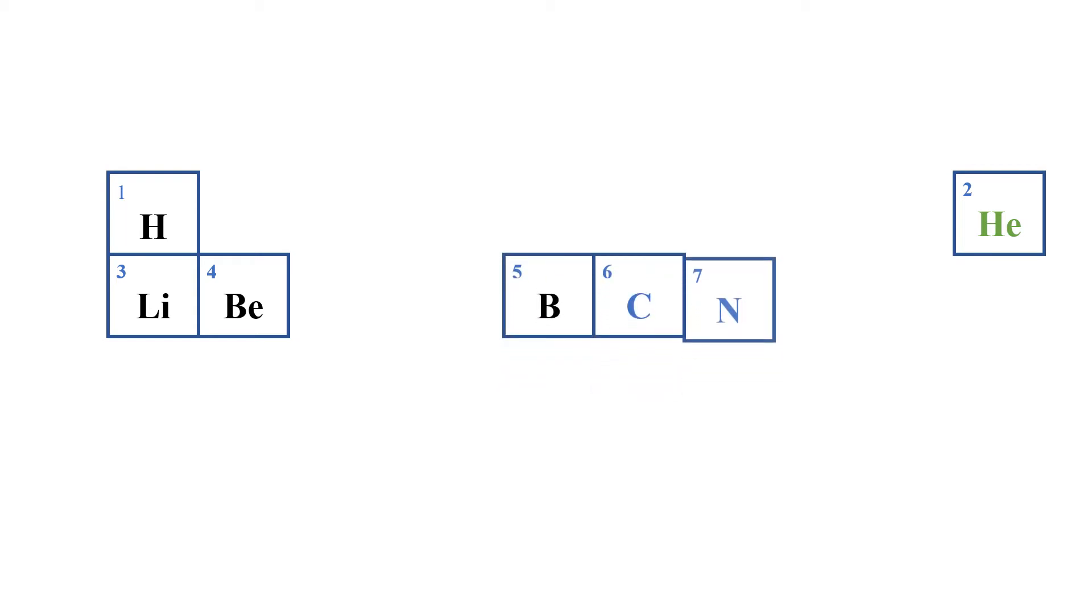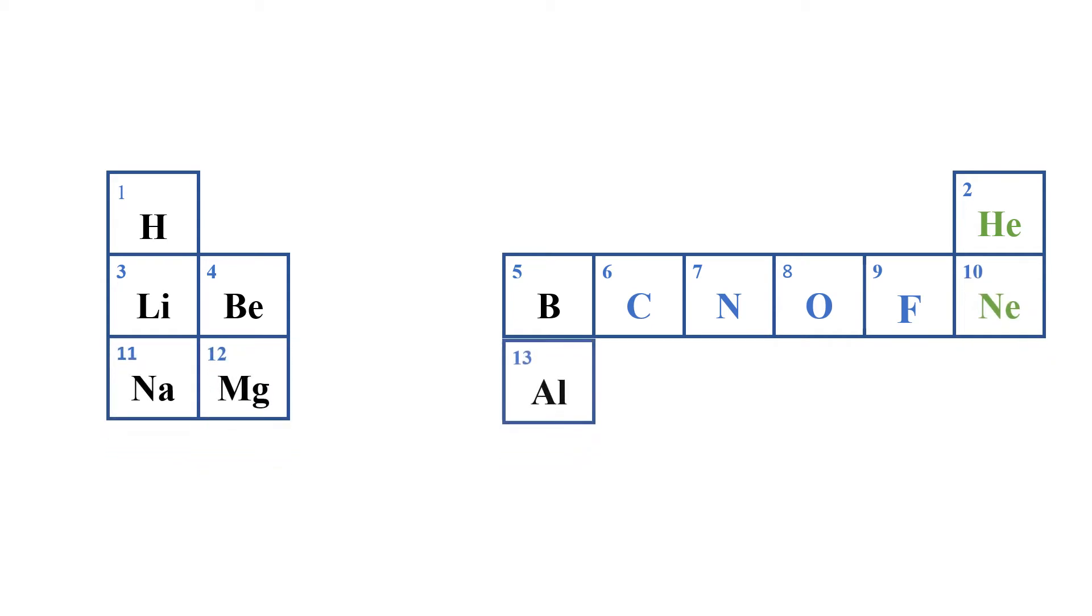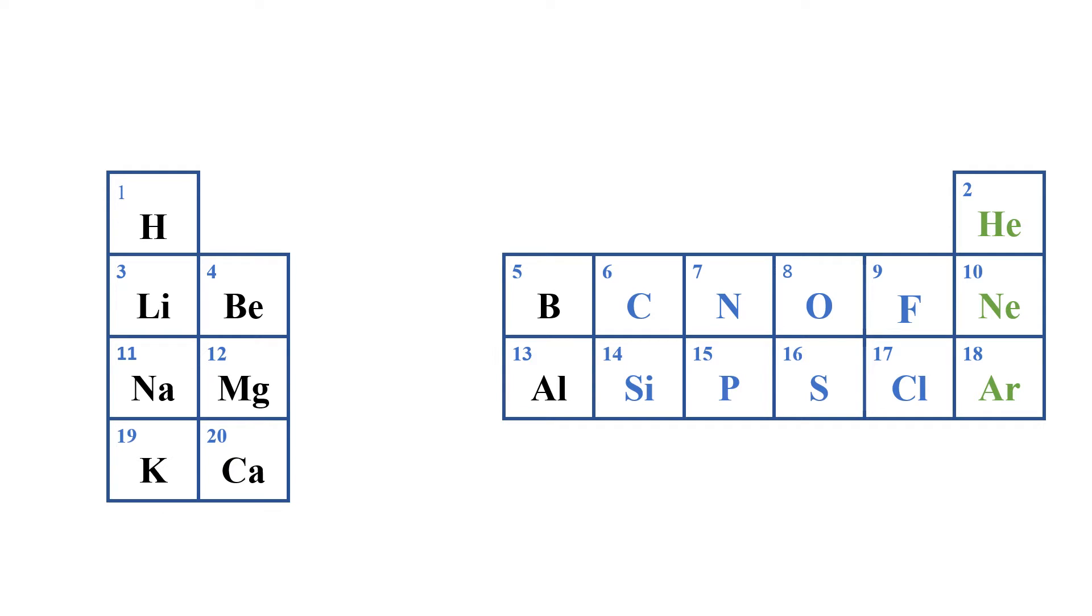When you look at the periodic table, we shall start with hydrogen, helium, lithium, beryllium, boron, carbon, nitrogen, oxygen, fluorine, neon, sodium, magnesium, aluminum, silicon, phosphorus, sulfur, chlorine, argon, potassium, and calcium. Those are the first 20 elements.